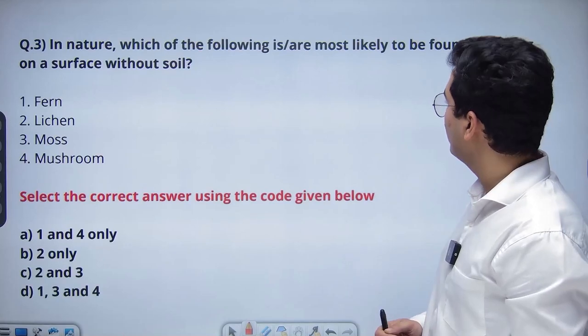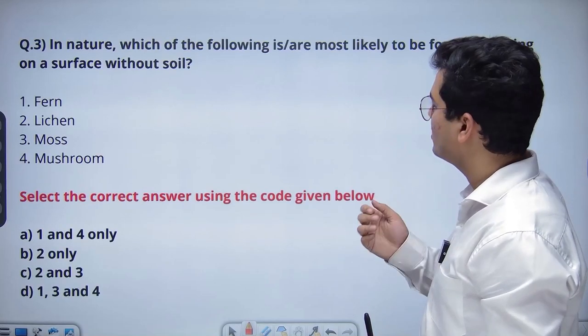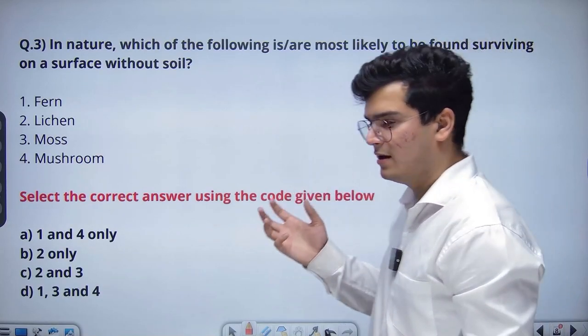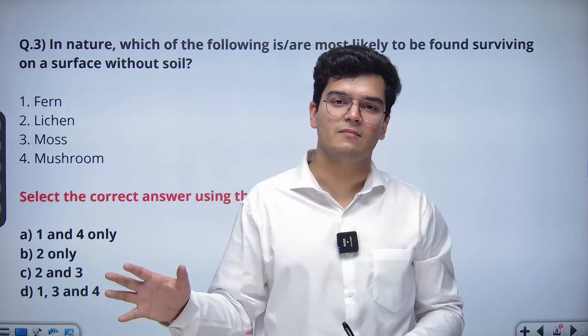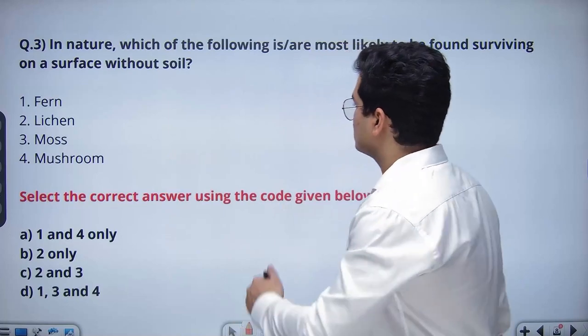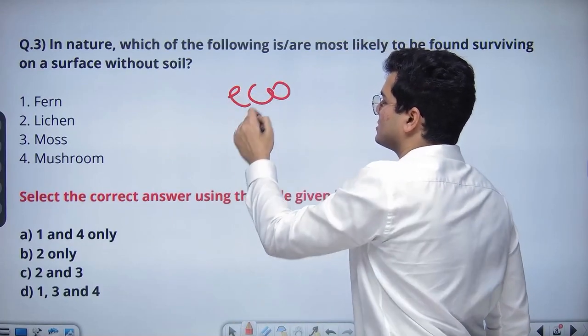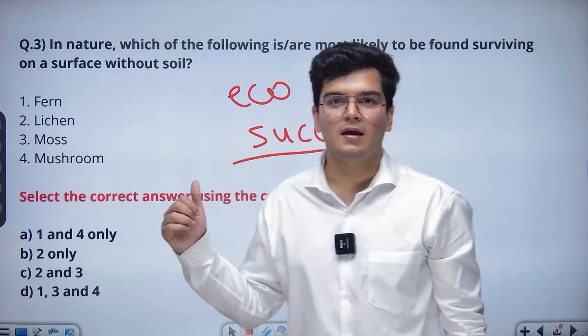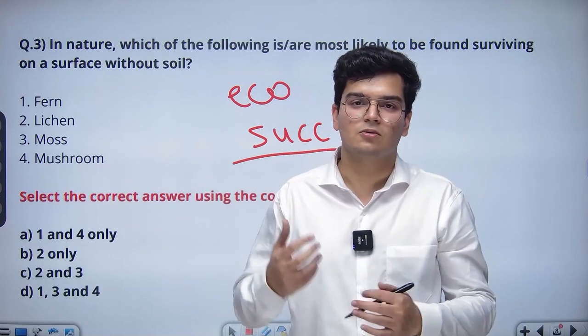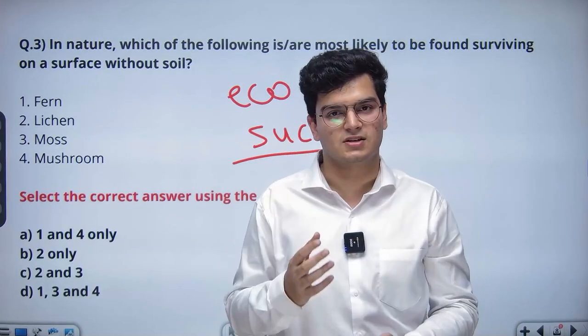In nature, which of the following are most likely to be found surviving on a surface without soil? The concept behind this question is given in every environment book because this is a question on ecological succession. But the problem is that we don't read it as a question on ecological succession.